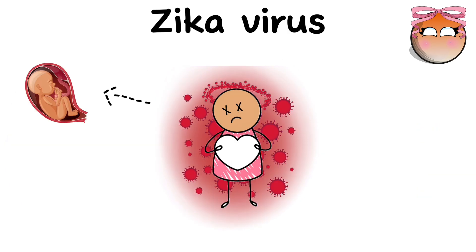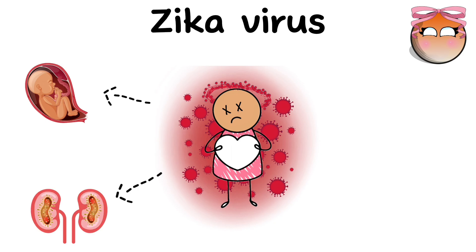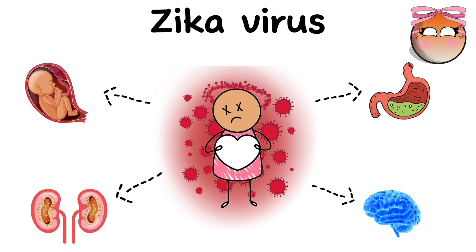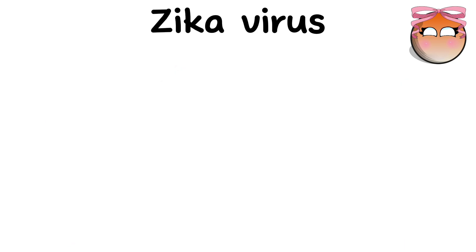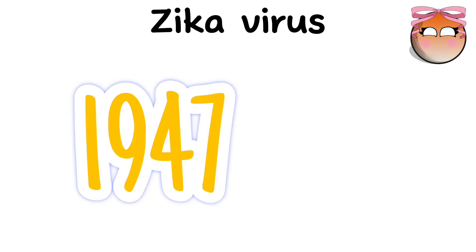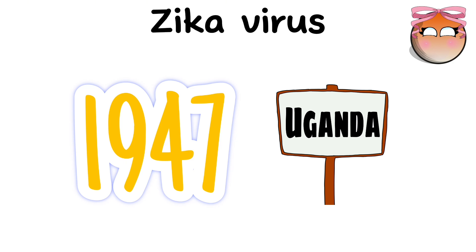However, some people may have serious complications, such as birth defects in newborns like microcephaly, as well as Guillain-Barré syndrome and inflammation of the brain in adults. The Zika virus was first discovered in 1947 in the forests of Uganda. Since then, it has been recorded in various countries, mainly in tropical and subtropical regions.